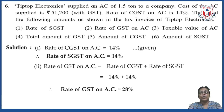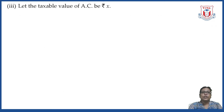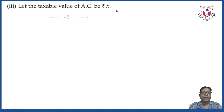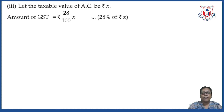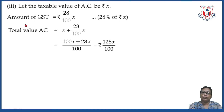For the third question, the taxable value of AC is unknown, so we take it as X. The amount of GST can be calculated as rate of GST multiplied by taxable value, so GST equals 28% of X, which we write as rupees 28X upon 100.